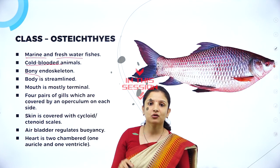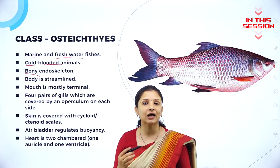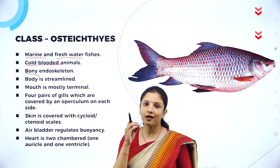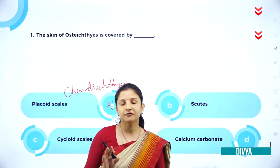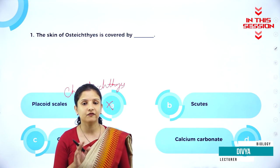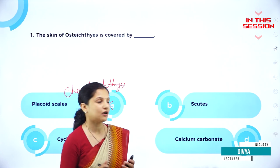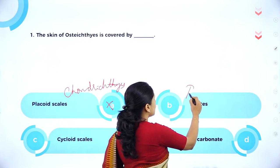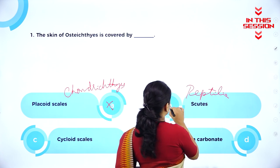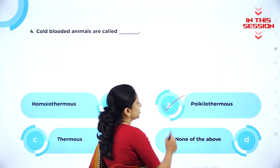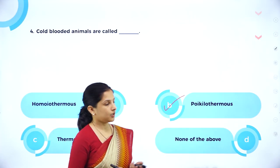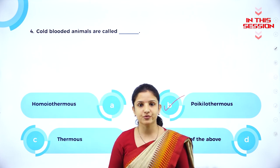Chondrichthyes have an endoskeleton which is cartilaginous, but Osteichthyes have a bony endoskeleton with hard bones. Scutes are found on reptiles — the dry cornified skin of reptiles is covered by scutes — and are found in class Reptilia. Poikilothermal is the term for cold-blooded animal. So option B is the right option here.